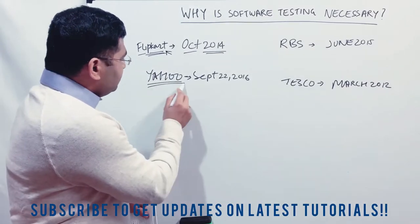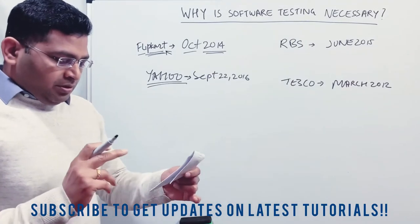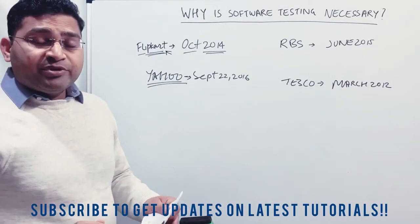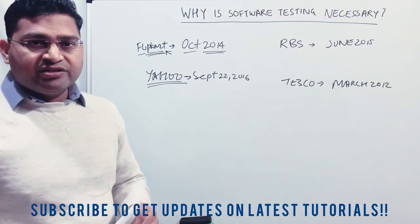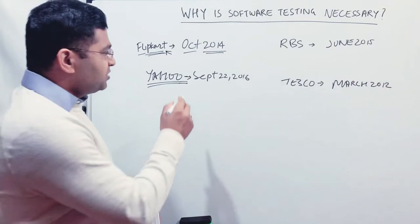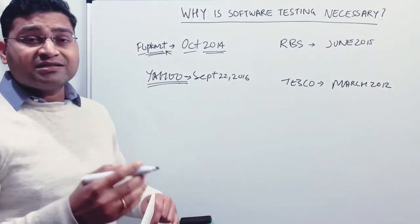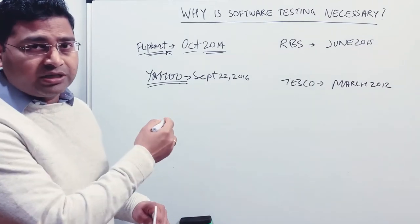Second giant Yahoo, September 22, 2016, they had a major data breach of that particular year. 500 million credentials got compromised from Yahoo. So September 22, 2016, that is how big the data breach was with that particular organization.